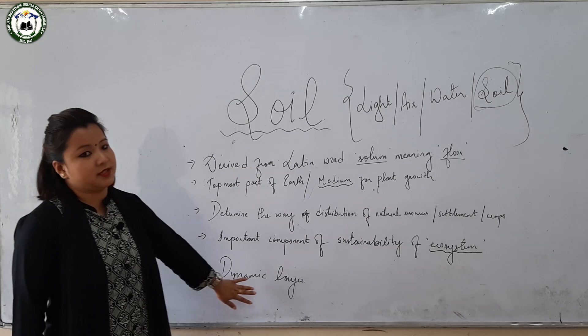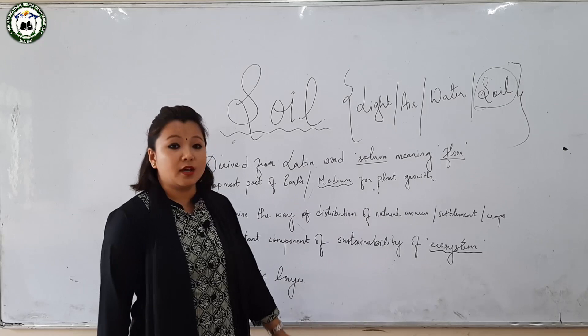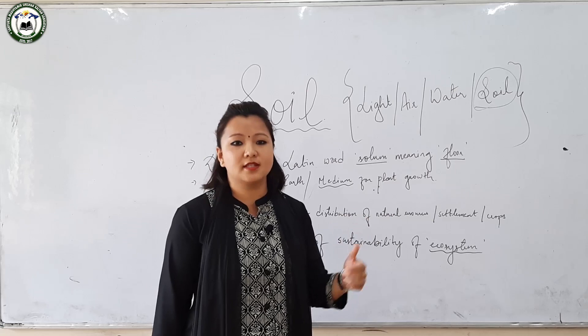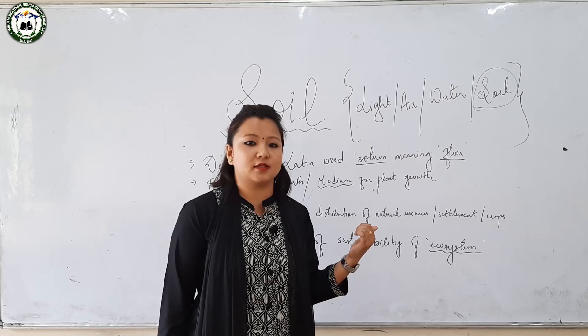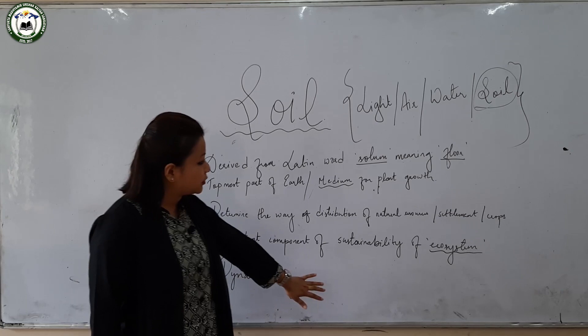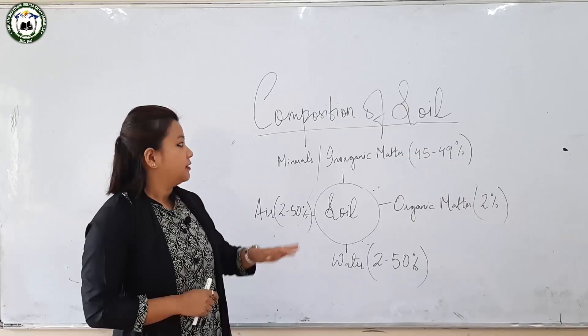Soil is regarded as the dynamic layer of the earth's surface or earth's crust because we get different types of soil based upon time and place — it varies from time to time and from place to place. From this we can conclude that soil is one of the essential parts of living and sustenance.